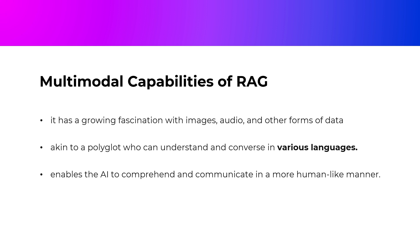Multi-Modal Capabilities of RAG. RAG's reach extends beyond text. It has a growing fascination with images, audio, and other forms of data. This multi-modal capability is akin to a polyglot who can understand and converse in various languages. RAG is not restricted to text inputs — it can process and generate information from images, audio, and more. This is revolutionary, as it enables the AI to comprehend and communicate in a more human-like manner, not only reading and understanding text, but also interpreting and generating content from visual and auditory stimuli.